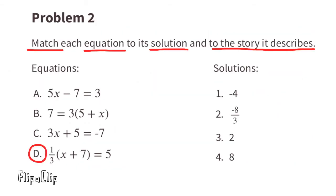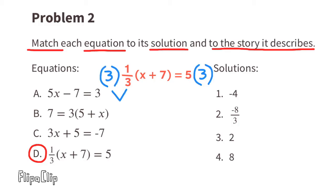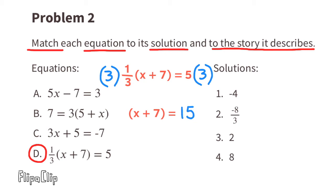Equation d: one third times (x plus 7) equals 5. One approach is to distribute: one third times x plus one third times 7, giving one third x plus 7 thirds equals 5, then subtract 7 thirds from both sides. An easier approach: multiply both sides by 3 to eliminate the fraction. The left side becomes x plus 7, and the right side becomes 5 times 3, which is 15. The equation now reads x plus 7 equals 15.